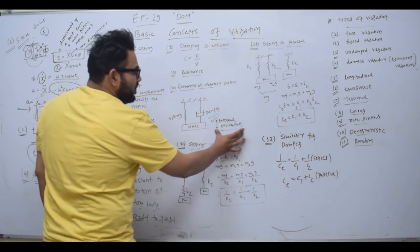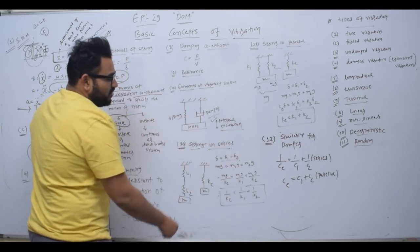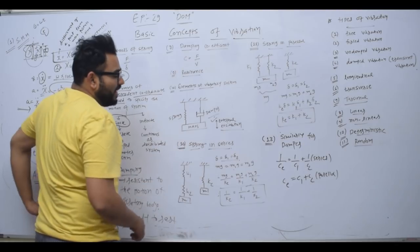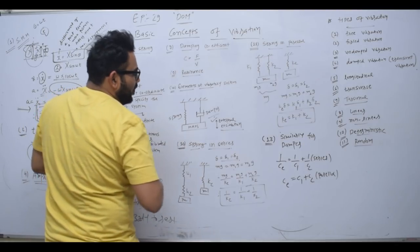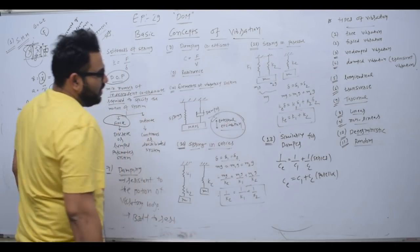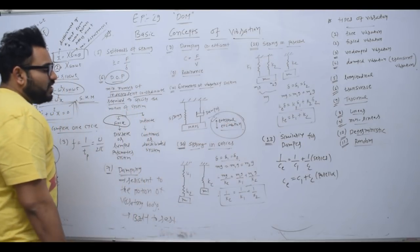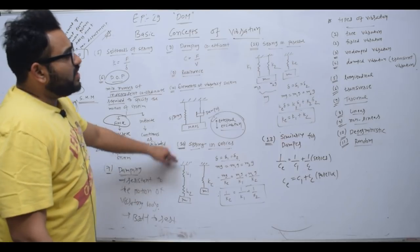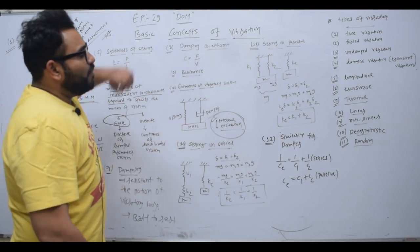The elements of a vibratory system are: a spring, in which potential energy is stored; a mass, in which kinetic energy is stored; and a damper, which dissipates energy so that after some time your system will come to rest from vibratory motion. External excitation means you apply an external force to the system.